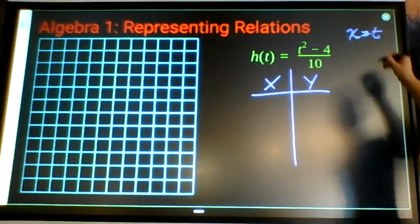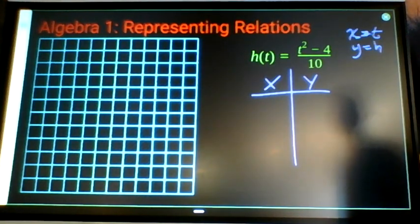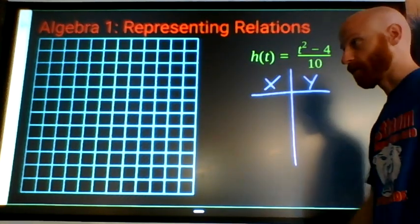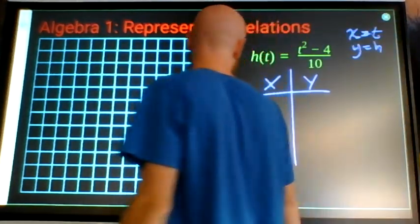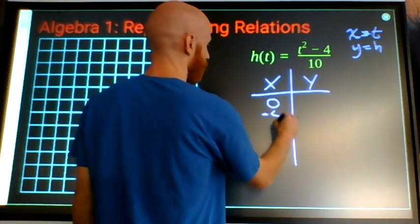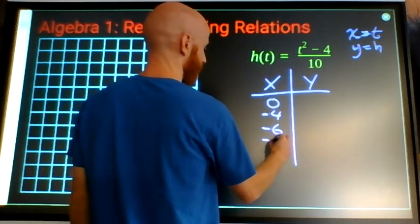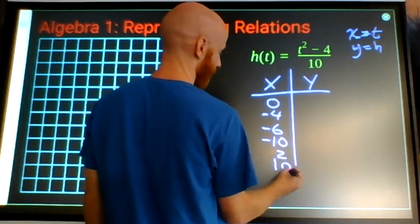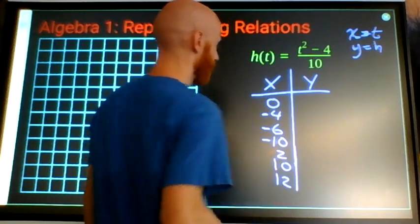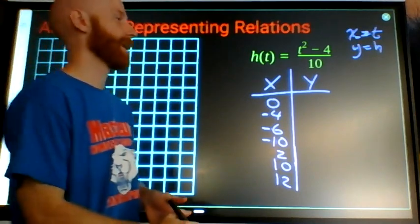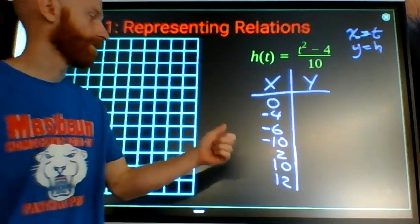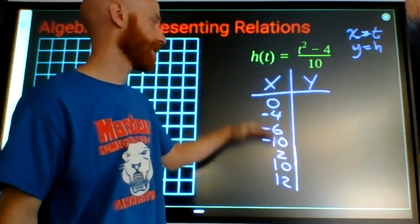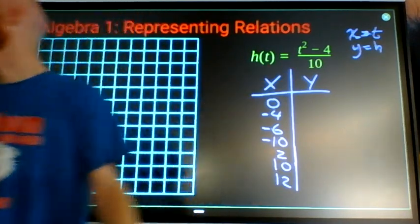So you'll pick some t values, some x values or t values. As I said before, I'm gonna want you to take three negatives, three positives, and zero. Then I will grab a calculator and figure out what does h equal when t is each of these values, or what does y equal when x is each of these values.